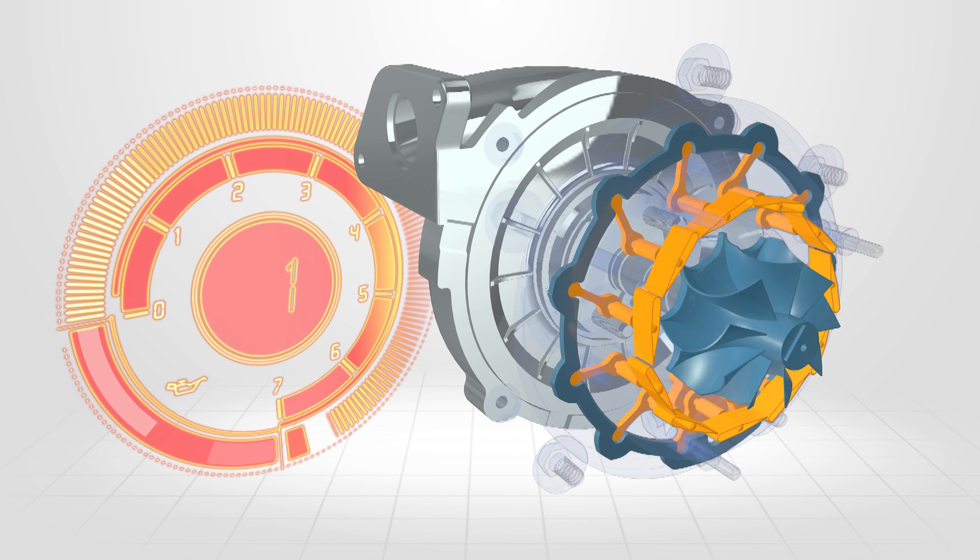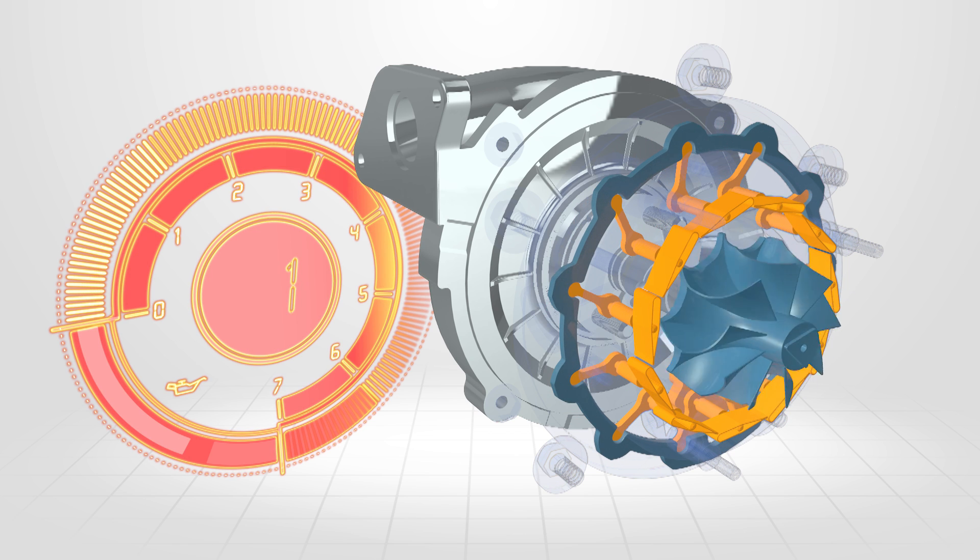Using movable vanes within the turbine housing allows the turbine speed to remain high even when the engine RPM is low.